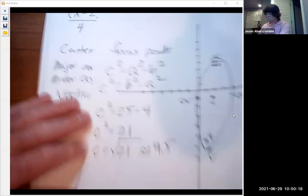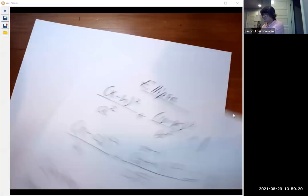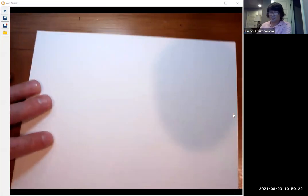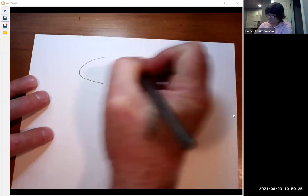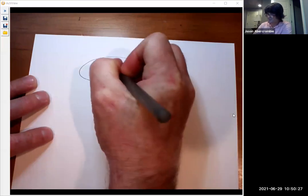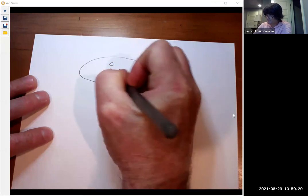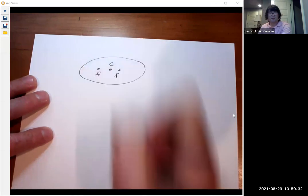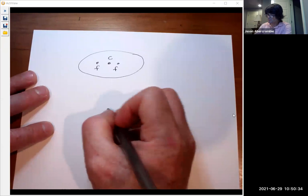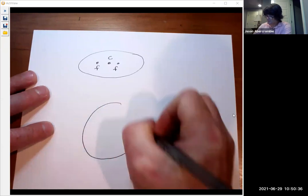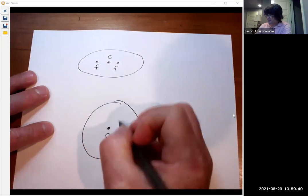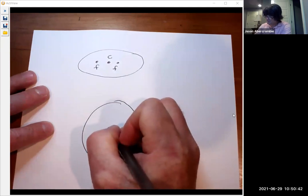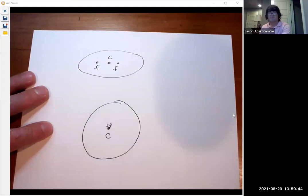If you had an ellipse kind of like this, where it's kind of fatter, you know, here's their center point. Maybe the focus points are there now. And if you have a circle, circles don't have focus points, because here's the center. And the focus points would just be right on the center, because it would be perfectly round.